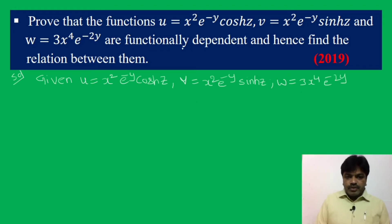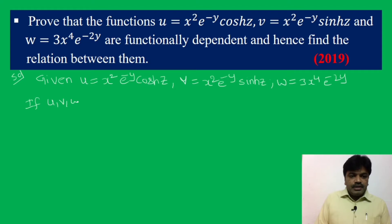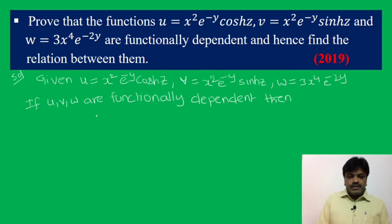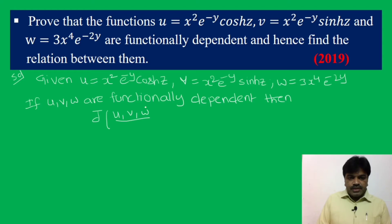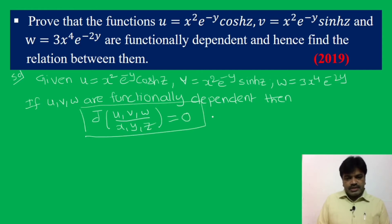Now, first we have to prove functional dependence. If u, v, and w are functionally dependent, then the Jacobian J(u, v, w) / J(x, y, z) is equal to 0. This is the condition.